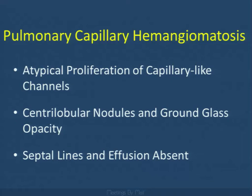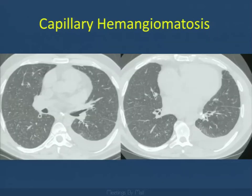Another rare condition to round things off — you may be the first person to suggest pulmonary capillary hemangiomatosis. This involves atypical proliferation of capillary-like channels with ground-glass and centrilobular nodular opacities in individuals with pulmonary hypertension. I'm not expecting you to make this diagnosis, but in the right clinical setting, it should trigger further investigation.